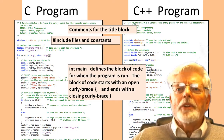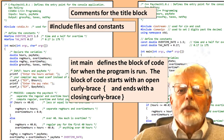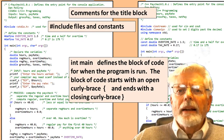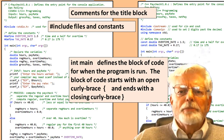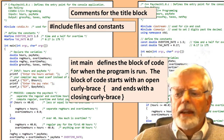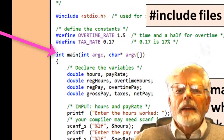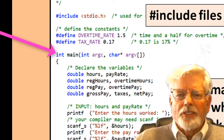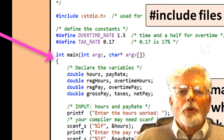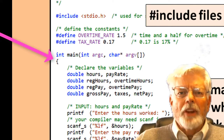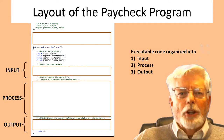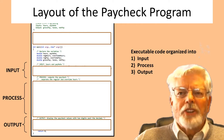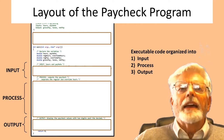Use comments for the title block that has the name of the program, your name and class, and a list of inputs and outputs. The include files and constants are placed before the line that contains int main. Int main defines a block of code that is executed when the program is run — the block starts with an open curly brace and ends with a closing curly brace. The executable code is organized into three sections: input, process, and output.